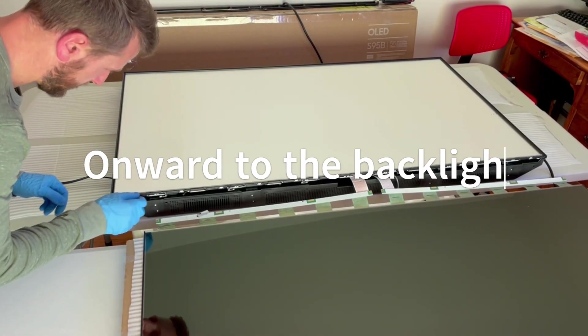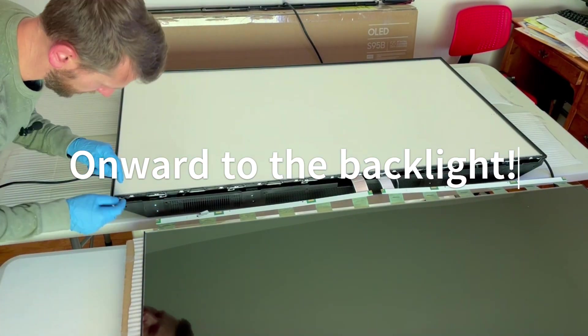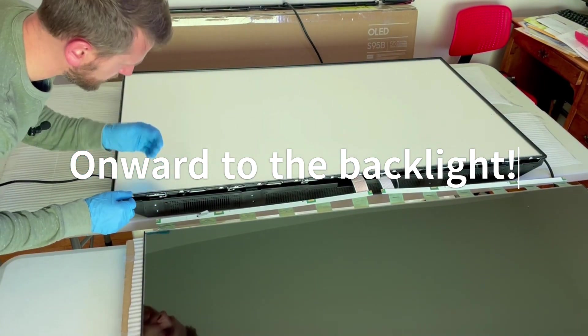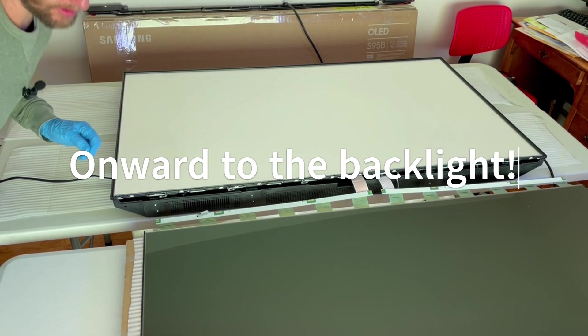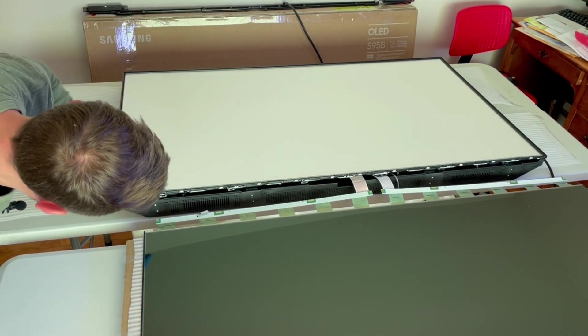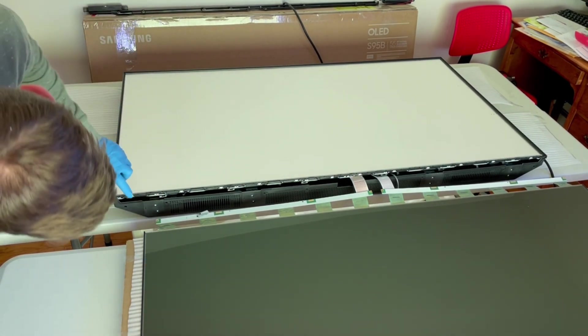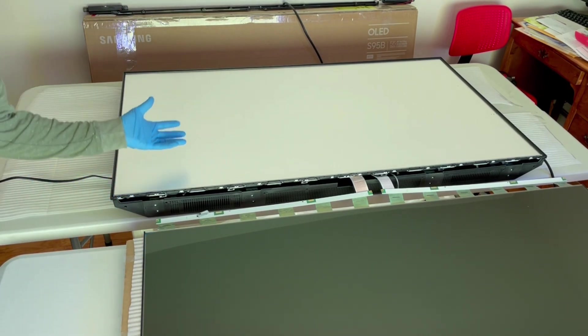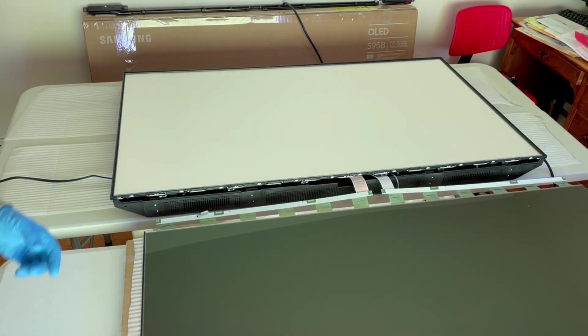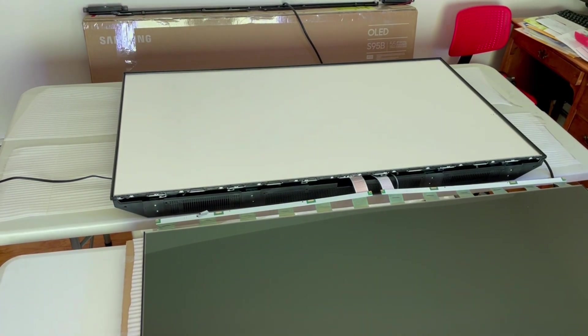So now we're going to try to get this support on the bottom off so that the films can come off a little bit easier. It looks like there's some tabs that I can pop out here, perhaps, to help remove this piece right here. And then all the optical films we should be able to pull out pretty easily. So let's get started.